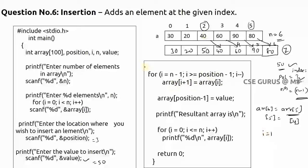When i becomes 1, the condition 1 greater than or equal to 2 is false, so the loop exits. Then array of position, which is 3 minus 1 equals index 2, is assigned the value 50. Array of 2, which previously held 40, is now replaced with 50. To print the result, i starts from 0 to less than or equal to size, now increased by 1, covering all 7 elements.